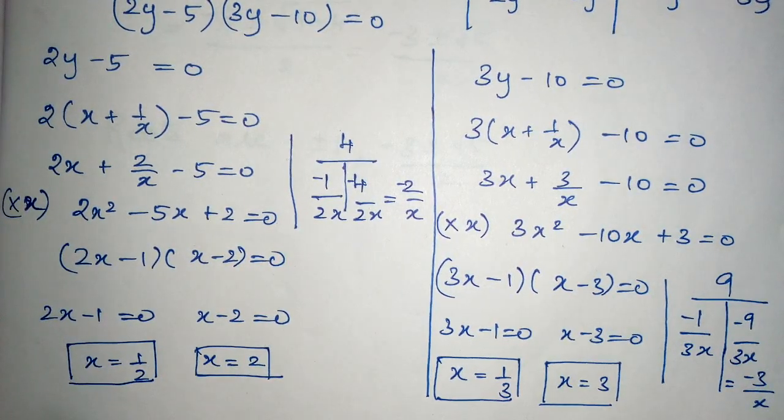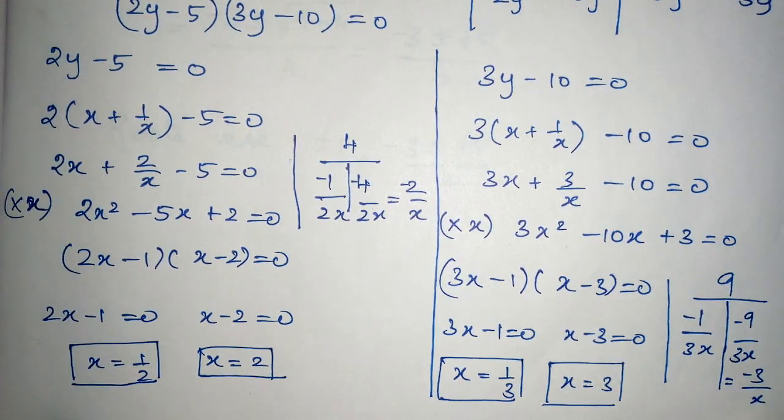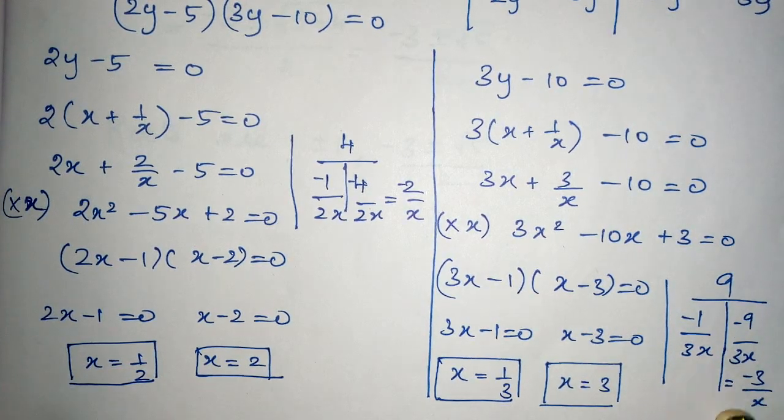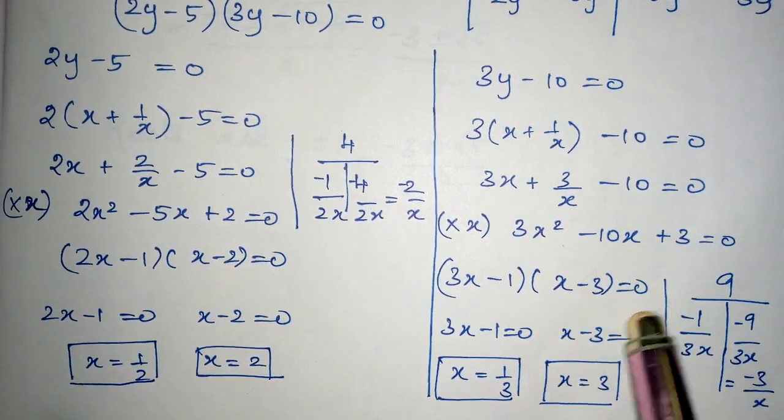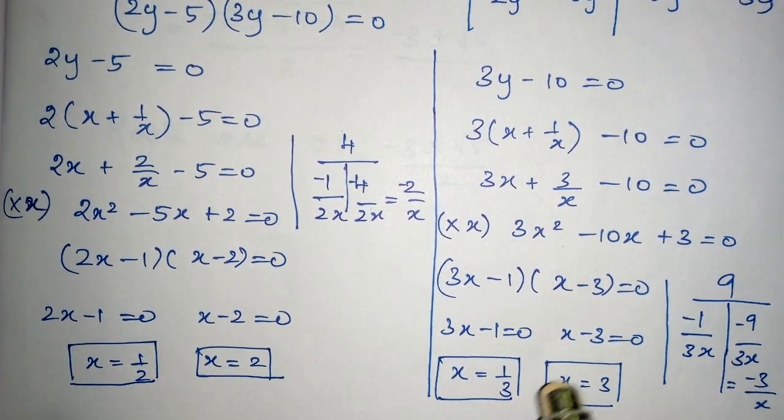It can be written as -1, -9 divided by 3x. On cancelling I have got -3/x. So (3x - 1)(x - 3) = 0. 3x - 1 = 0, x = 1/3, and x - 3 = 0, x = 3.